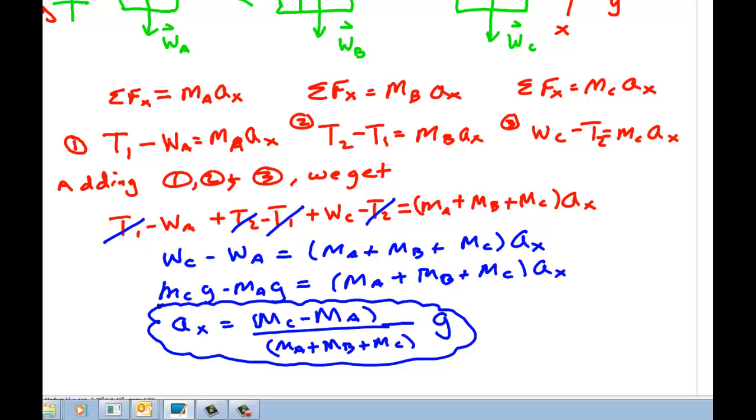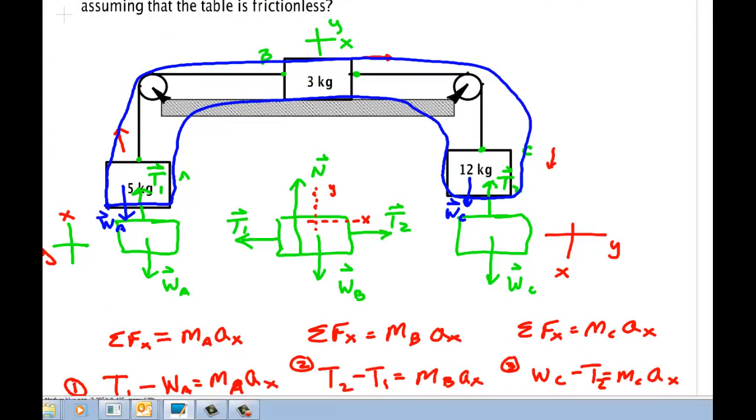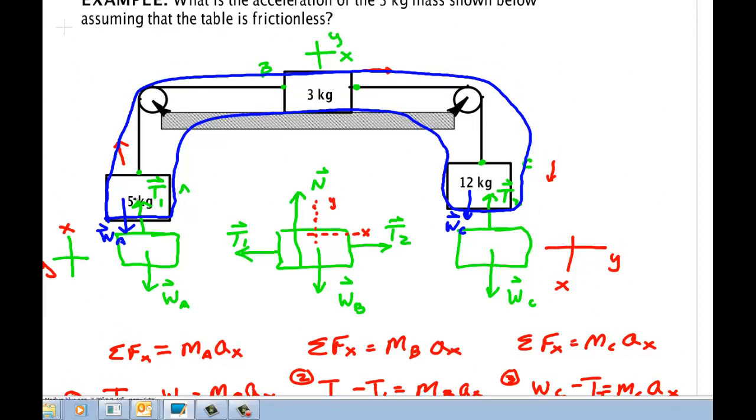But we want to check our work and make sure it makes sense. This says that if mass C is bigger than mass A, the acceleration will be positive. Let's go back up and look at our drawing. If this is bigger than that, then the acceleration will be positive X, which means that it will go down this way and up that way. That makes total sense of what I am used to. On the other hand, if M_A is bigger than M_C, then you get a negative number in our formula, which means it goes this direction. And if the two are the same, there is no acceleration.